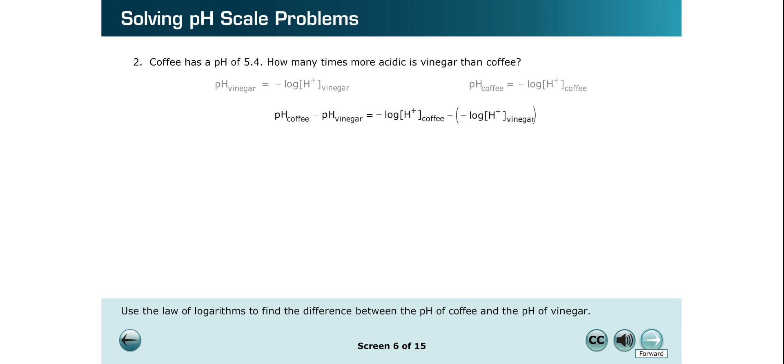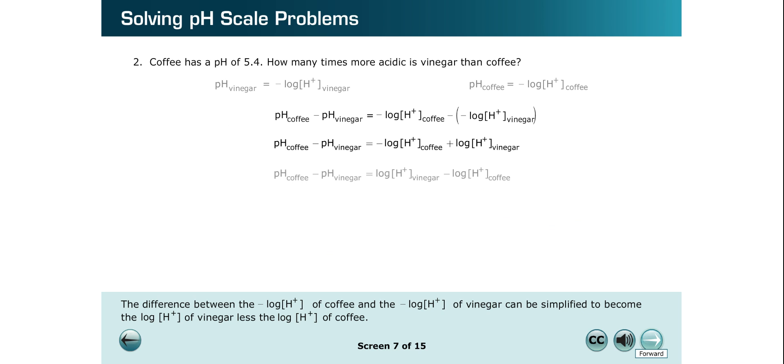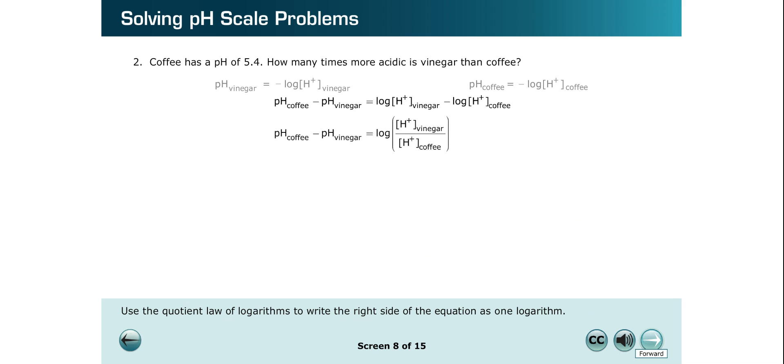The difference between the negative log of the hydrogen ion concentration of coffee and the negative log of the hydrogen concentration of vinegar can be simplified to become the log of the hydrogen ion concentration of vinegar less the log of hydrogen ion concentration of coffee. Use the quotient law of logarithms to write the right side of the equation as one logarithm.